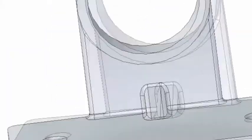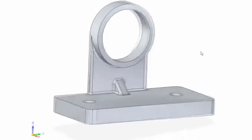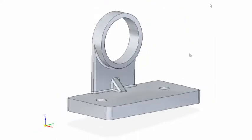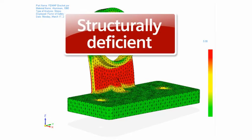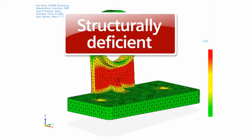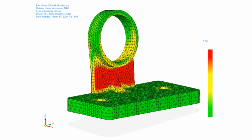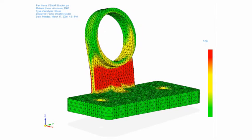How many times have you had to prove someone else's work without the benefit of knowing how it was designed? Here an analyst finds a structurally deficient part as identified by the massive red areas. With synchronous technology, anyone can make complex modifications without needing to know how the model was created.